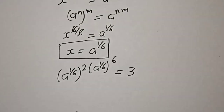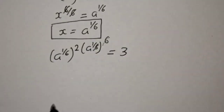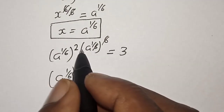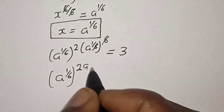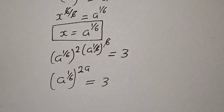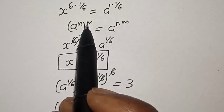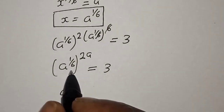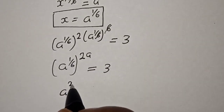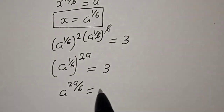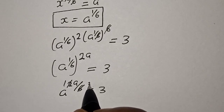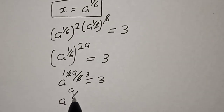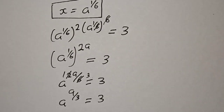Then from this same rule, we apply the rule that a raised to power n, raised to power m, is equal to a raised to power n times m. So this becomes a raised to power 1 over 6 raised to power 2a, giving us a raised to power 2a over 6, is equal to 3.